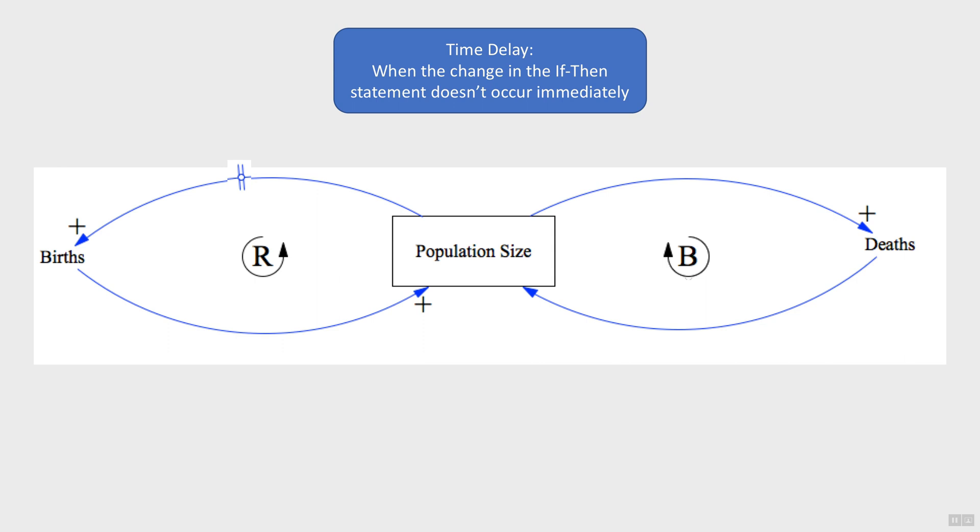Same thing for population size and deaths. It takes time for the babies to grow and affect the death rate, so we can put a delay symbol on this link as well. And those are the basic components needed to create a causal loop diagram.